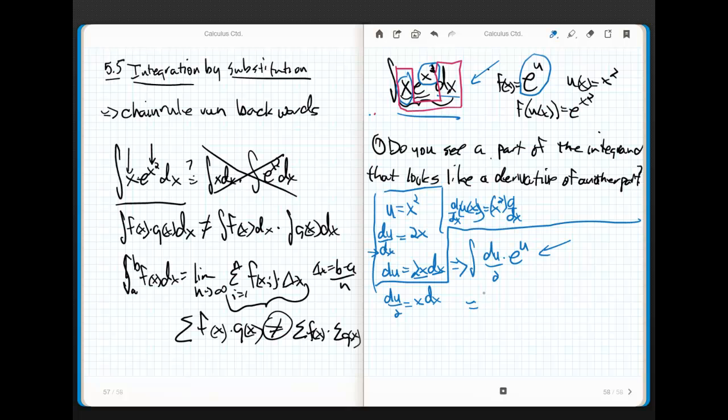So, watch what happens here. I have a constant. Remember, with a constant with an integral, I can pull out in front, and I end up with e to the u du.